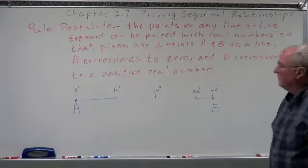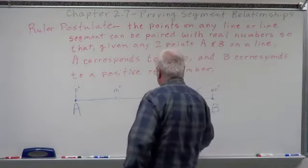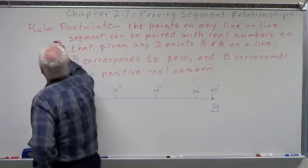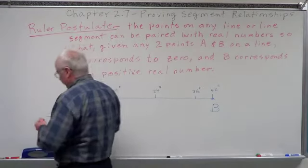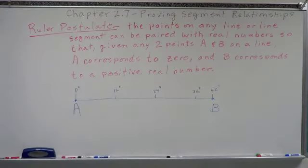There's a couple of postulates we need to go over. The first one is the Ruler Postulate. The Ruler Postulate is: the points on any line or line segment can be paired with real numbers so that given any two points A and B on a line, A corresponds to zero and B corresponds to a positive real number.